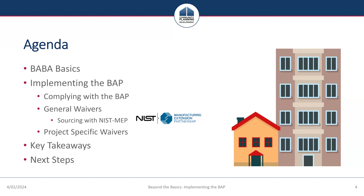In this session, we will briefly recap the basics of the BABA requirements — more information is available on the HUD Exchange, including FAQs, quick guides, previous webinar recordings, and CPD's BABA implementation notice. We will also hear about assistance from NIST MEP to help identify domestic providers of manufactured products, review how to maximize flexibilities offered under existing HUD general waivers, and how to request a project-specific waiver when using an American-made product is not feasible. Finally, this broadcast will point to next steps to offer and submit a waiver application for consideration by HUD and the Made in America office.